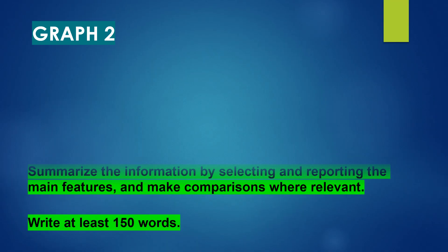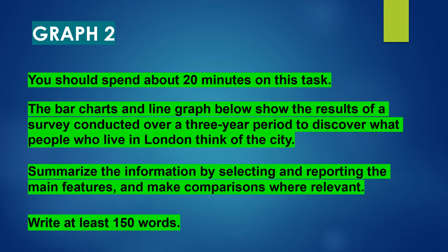Now moving on to graph 2, you should spend about 20 minutes on this task. The bar charts and line graph below show the results of a survey conducted over a three-year period to discover what people who live in London think of the city. Summarize the information by selecting and reporting the main features and make comparisons where relevant. Write at least 150 words.